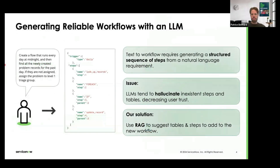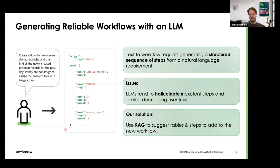The task of text-to-workflow is not trivial. You have a natural language requirement coming from the user, and the goal is to generate a JSON or structured sequence of steps that define the workflow. As an example, here we have a flow that runs on a daily basis, looks up a bunch of problem records, loops over them, and if a condition is met, updates each of the records. This user requirement is translated into a JSON output, which is rendered in Flow Designer as a full working workflow.